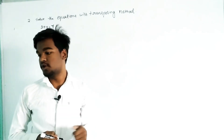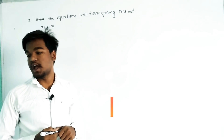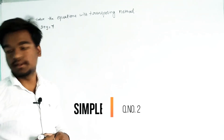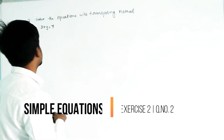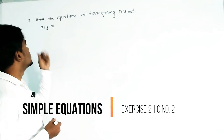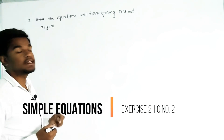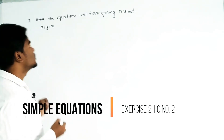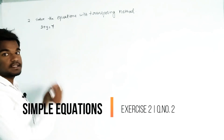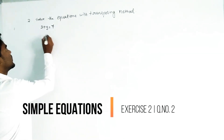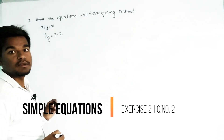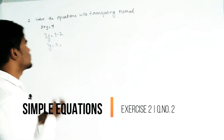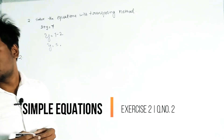In this module, I will explain how to solve an equation with transposing. Our first question is y plus 2 equals 7. The left side should have only one single variable. To isolate y, transpose plus 2 to the right side; plus 2 becomes minus 2. So y equals 7 minus 2, which gives y equals 5.